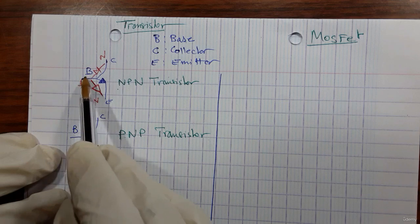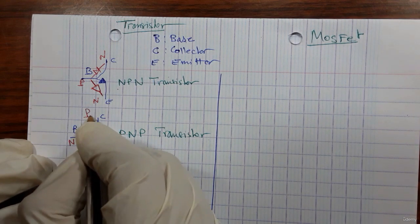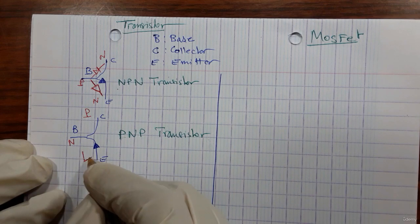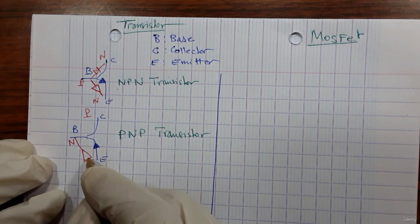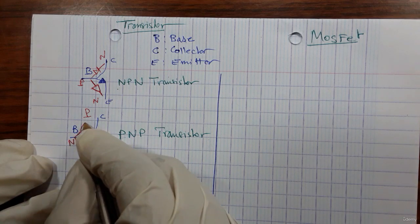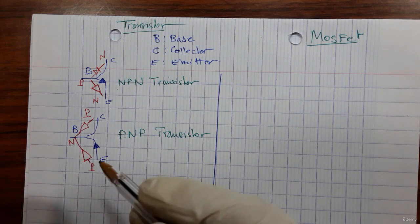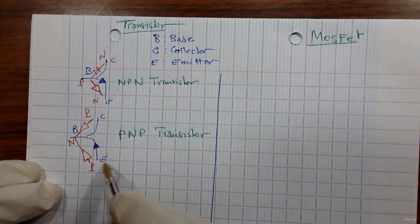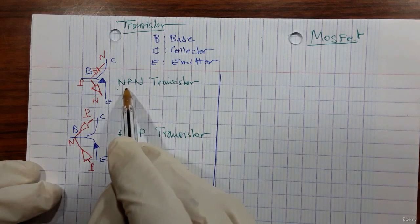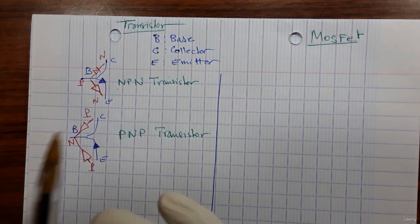For PNP, we have P, then N, then P. The diodes should be oriented accordingly. The anode and cathode positions differ: in a PNP transistor the cathodes are connected together, while in an NPN transistor the anodes are connected together. This is just a theoretical model.